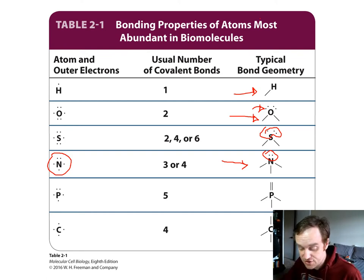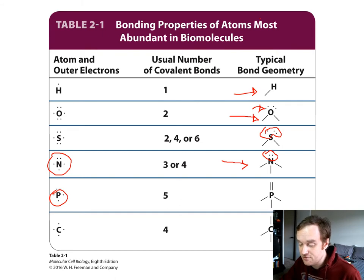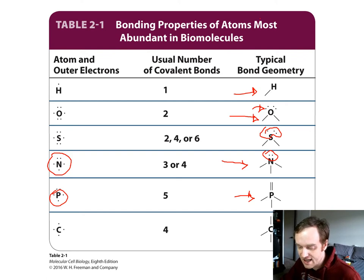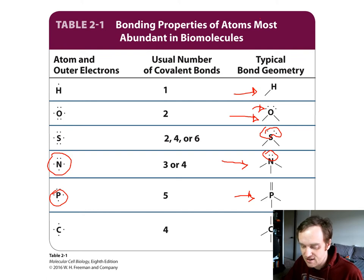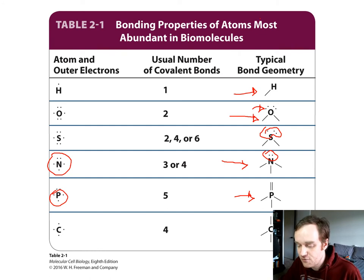Phosphorus has five electrons to share and commonly forms five covalent bonds — one double bond and three single bonds. This is what forms the backbone of nucleic acids through phosphoric acid. Carbon is the heavy lifter in biomolecules, with four electrons to share, forming four covalent bonds.